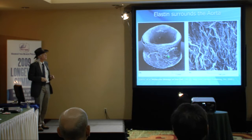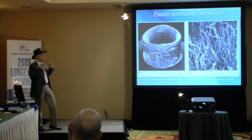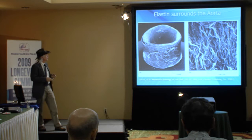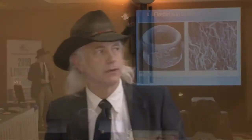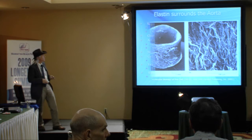Blood vessels need to be elastic because every time the heart pumps it sends a pressure wave through the whole system. If our blood vessels were steel pipes, we'd be blowing out our brains with pressure waves all the time. So the aorta acts as a shock absorber, and as we get older, glycation ties together collagen fibers and breaks the elastin fibers, making it stiffer and stiffer — that's hardening of the arteries.